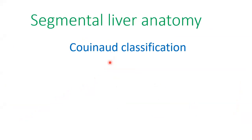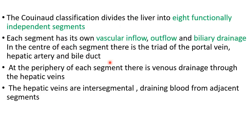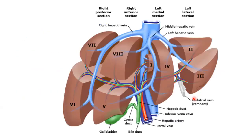Now we describe the new segmental liver anatomy, called the Couinaud classification. This classification divides the liver into eight functionally independent segments. Each segment has its own vascular inflow, outflow, and biliary drainage. In the center of each segment there is a triad of portal vein, hepatic artery, and bile duct. At the periphery of each segment, venous drainage occurs through the hepatic veins, which are intersegmental, draining blood from adjacent segments.